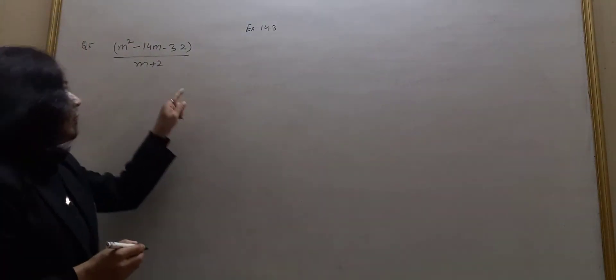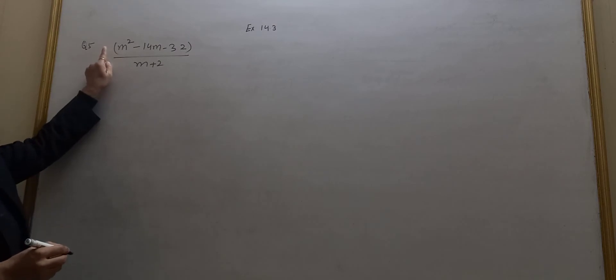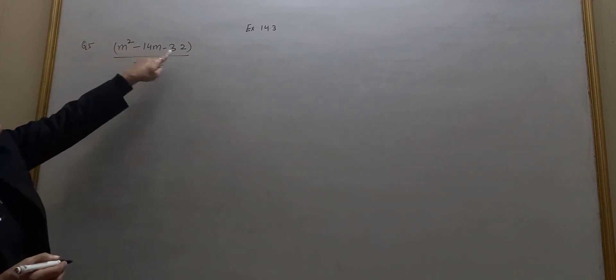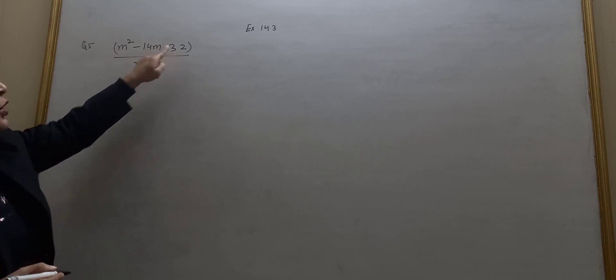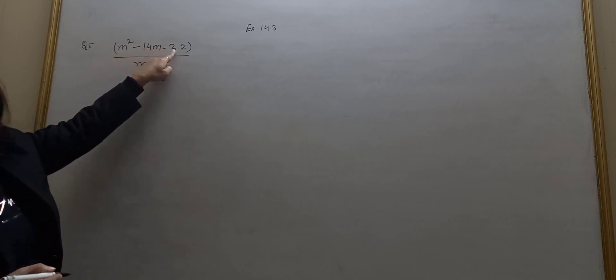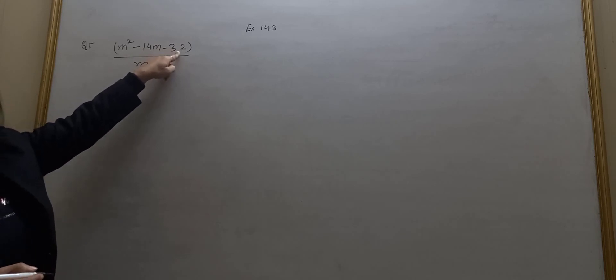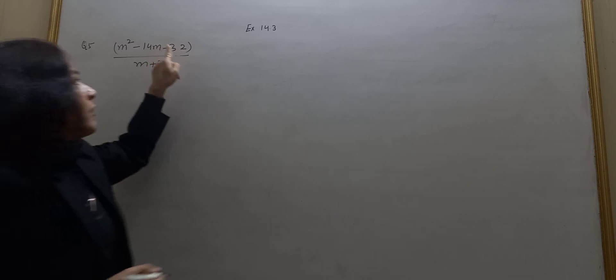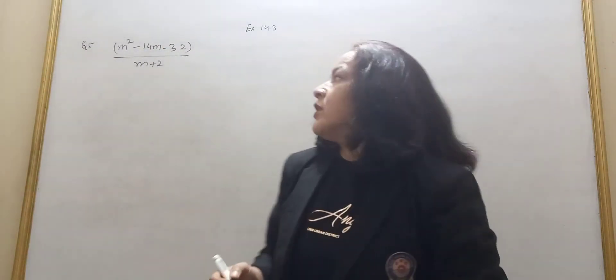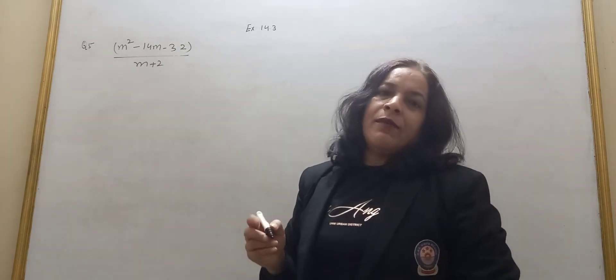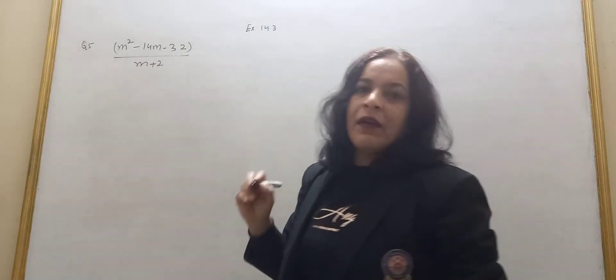In this type of question, first of all focus on the numerator: m squared minus 14m minus 32. Now, 32 is not a perfect square, so you can't factorize it with the help of an identity. So we will factorize the numerator with the help of splitting the middle term.